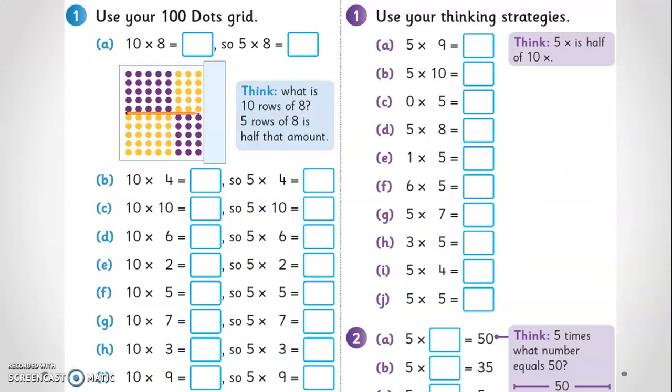As the week progresses, the initial concrete and pictorial activities are designed in such a way as to encourage the children to discover connections between facts and begin to develop strategies for that particular group of facts. In this case, the strategy that five times any number is half of ten times that number.